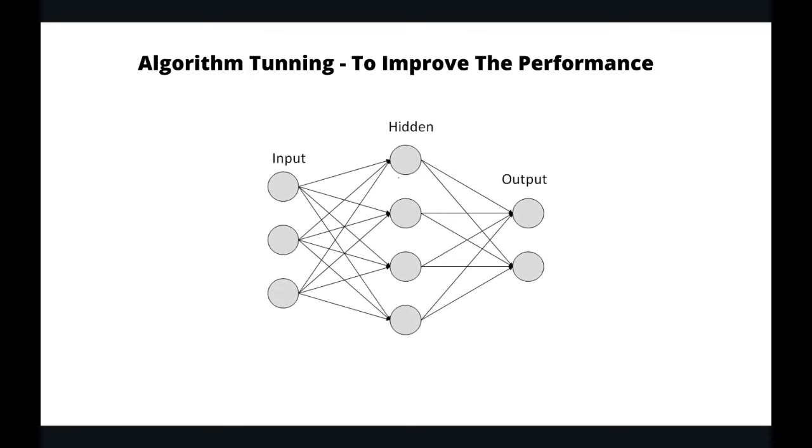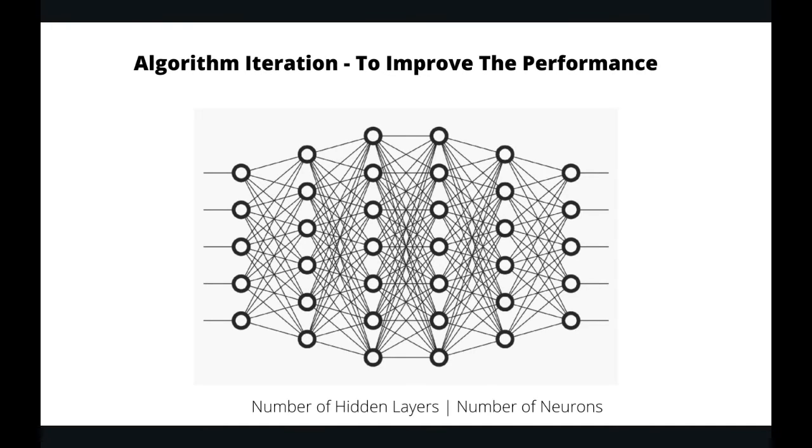Now let's talk about algorithm. In our case, we have used artificial neural network as the algorithm. As we understand, our artificial neural network consists of an input layer, an output layer, and a number of hidden layers. The most critical parameters are the number of hidden layers and the number of neurons.